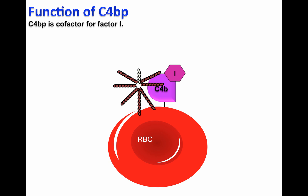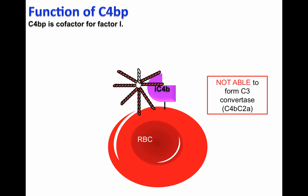C4BP is a cofactor for factor I, which means that it will allow factor I to cleave C4B to generate iC4B, or the inactive form of C4B. iC4B will not be able to form the C3 convertase C4B-C2A, and as a consequence, the red blood cells will survive.